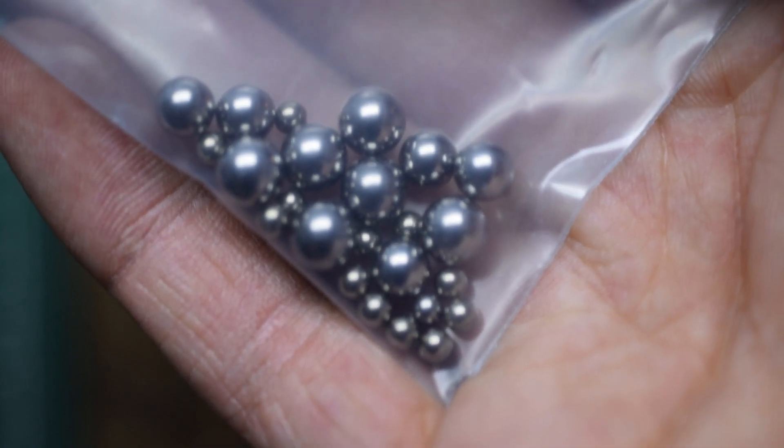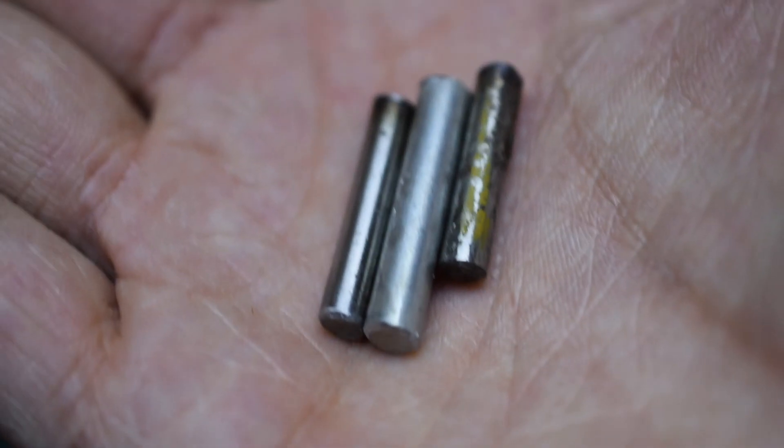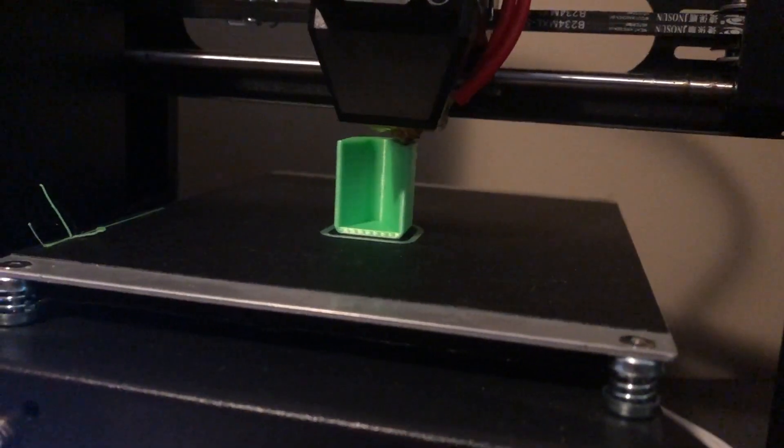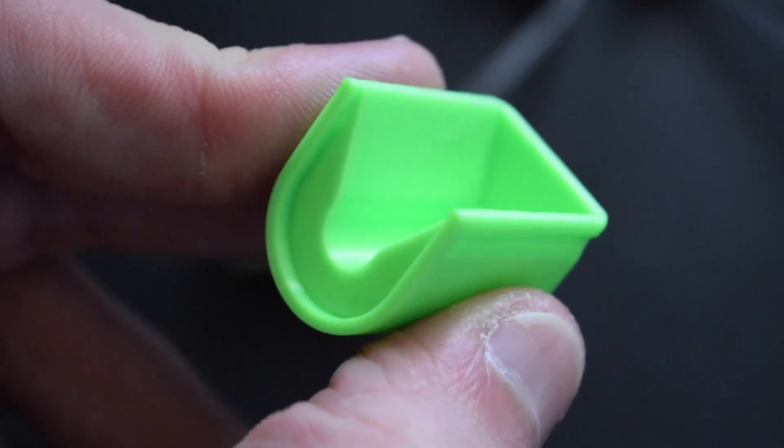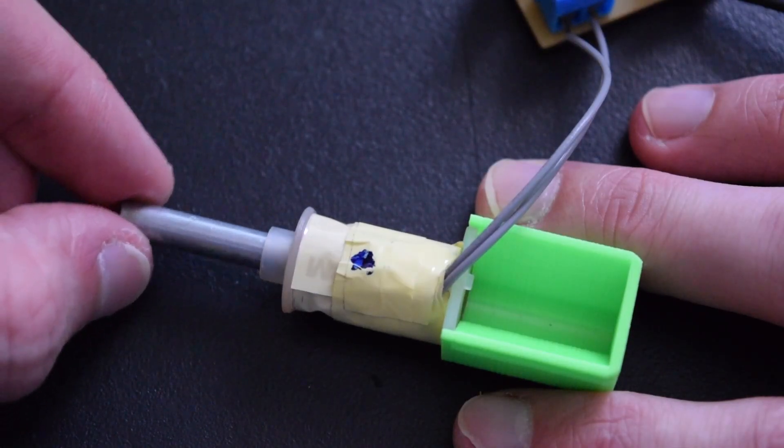So I have a solution that I think will work. Instead of using these ball bearings, I've prepared a few small metal rods, and I 3D printed a new attachment that's big enough to hold the rods. I think this will work because the rods will be under the magnetic field for a longer amount of time.